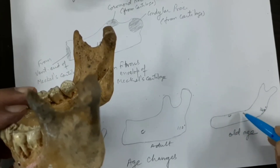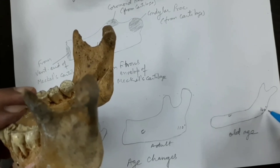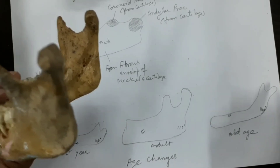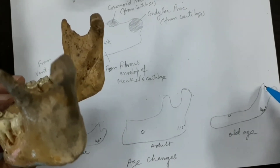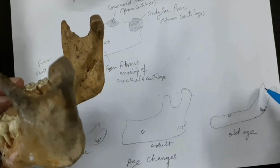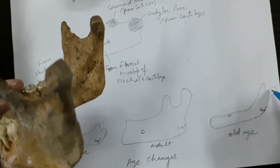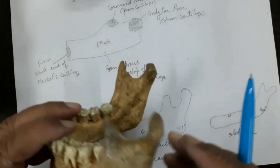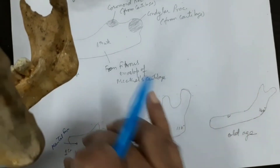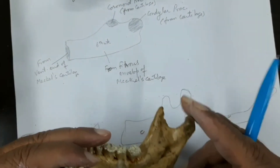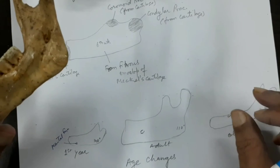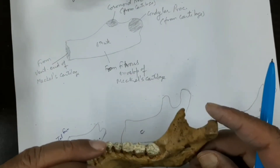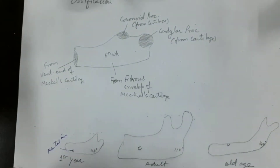In old age, the angle of the mandible again becomes around 140 degrees — as it was before one year of age. Again, the coronoid process goes to a higher level compared to the condylar process. So these are the age changes, and with knowledge of the shape of the mandible you can determine whether it is from a child, an adult, or an old person. Thank you very much for watching this video on the mandible.